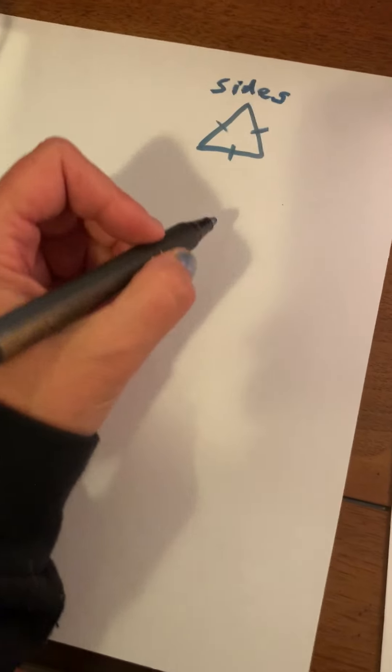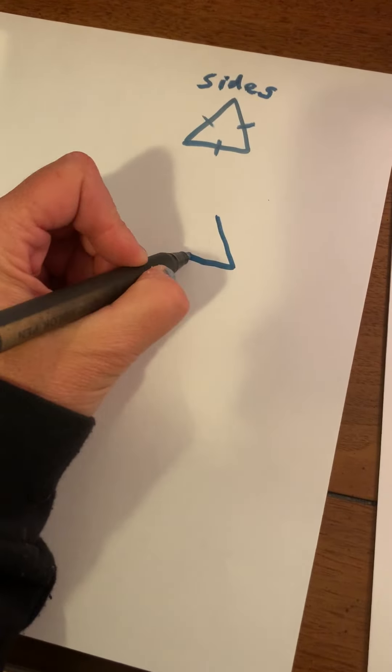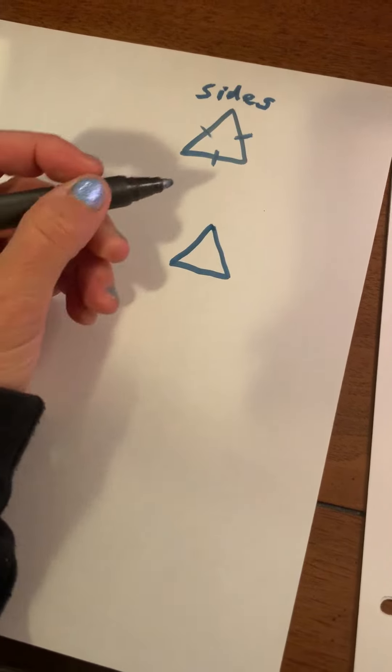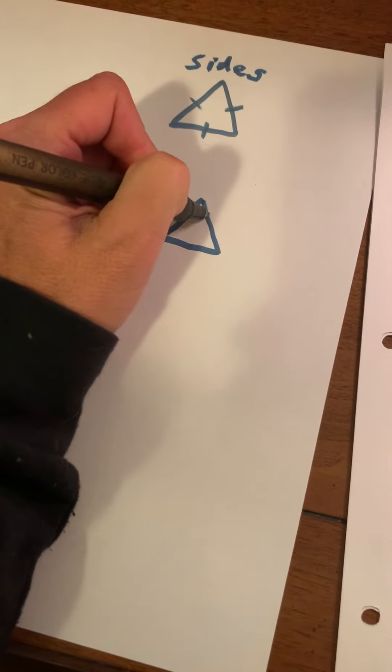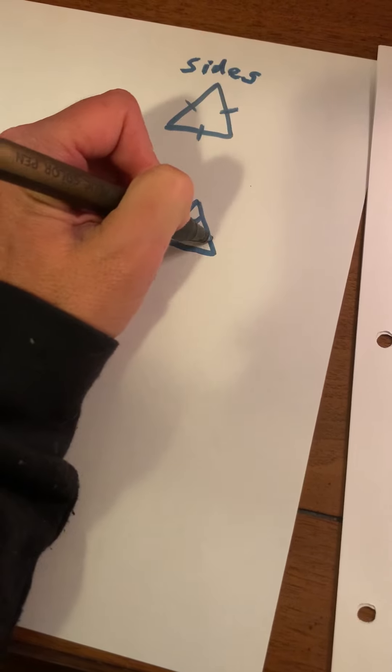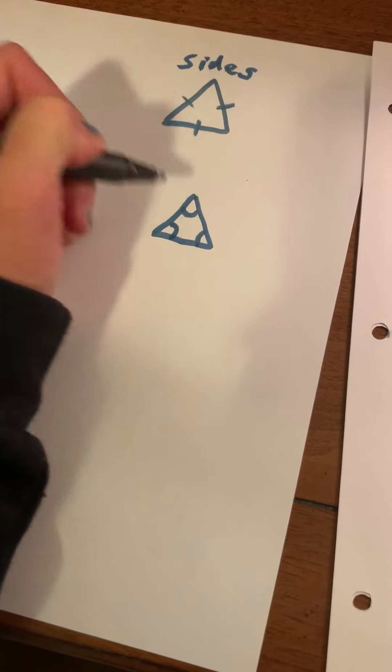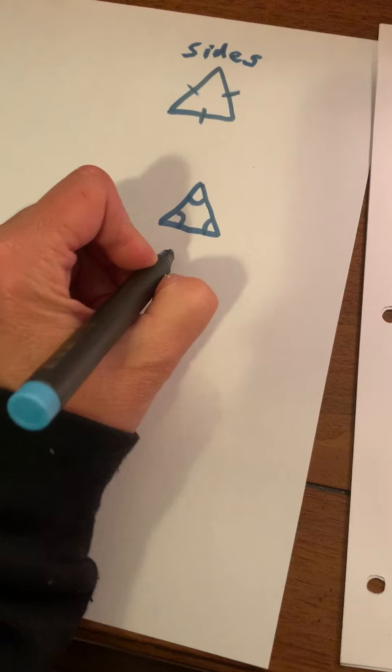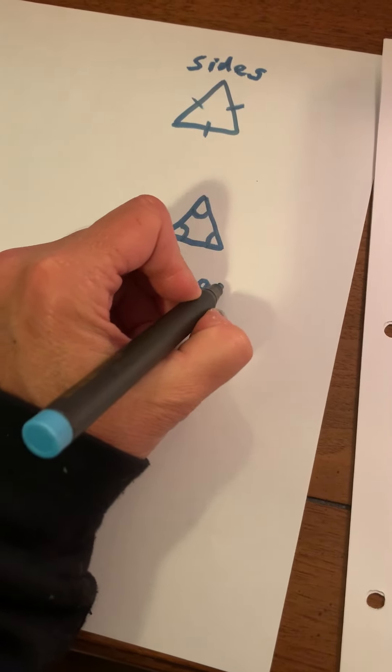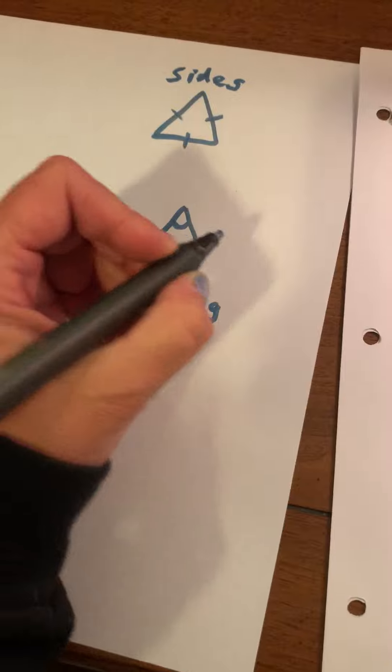Now the angles are the way it comes together. So where the two parts come together, those are angles. And there's also three angles. That's one way to count them.